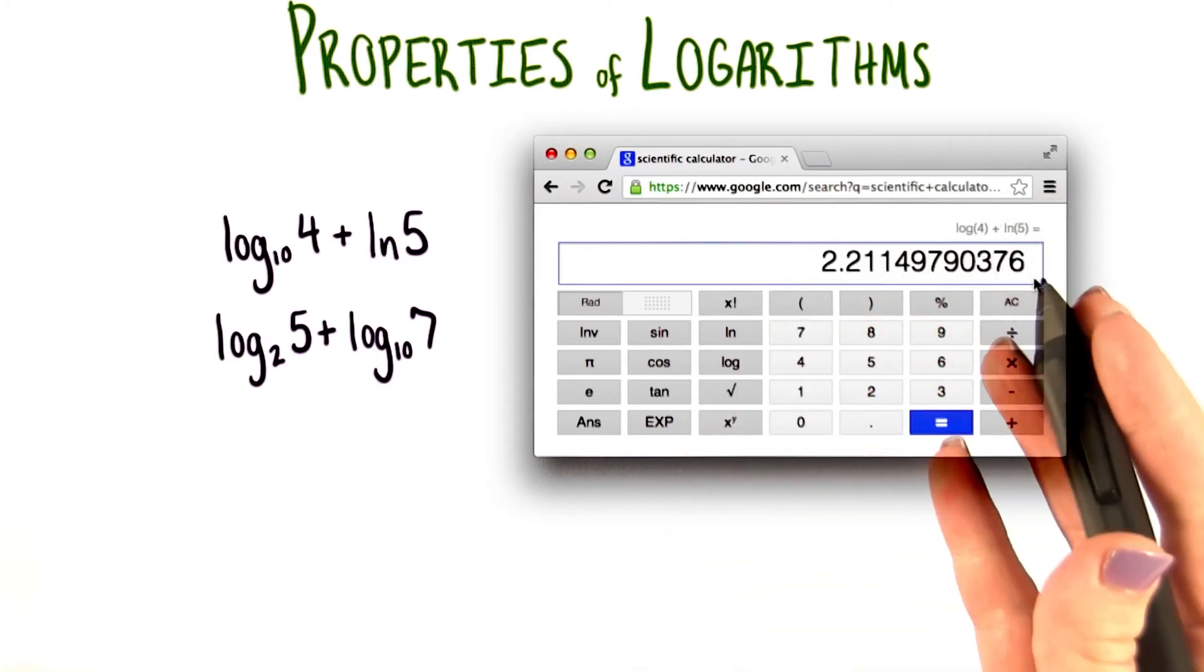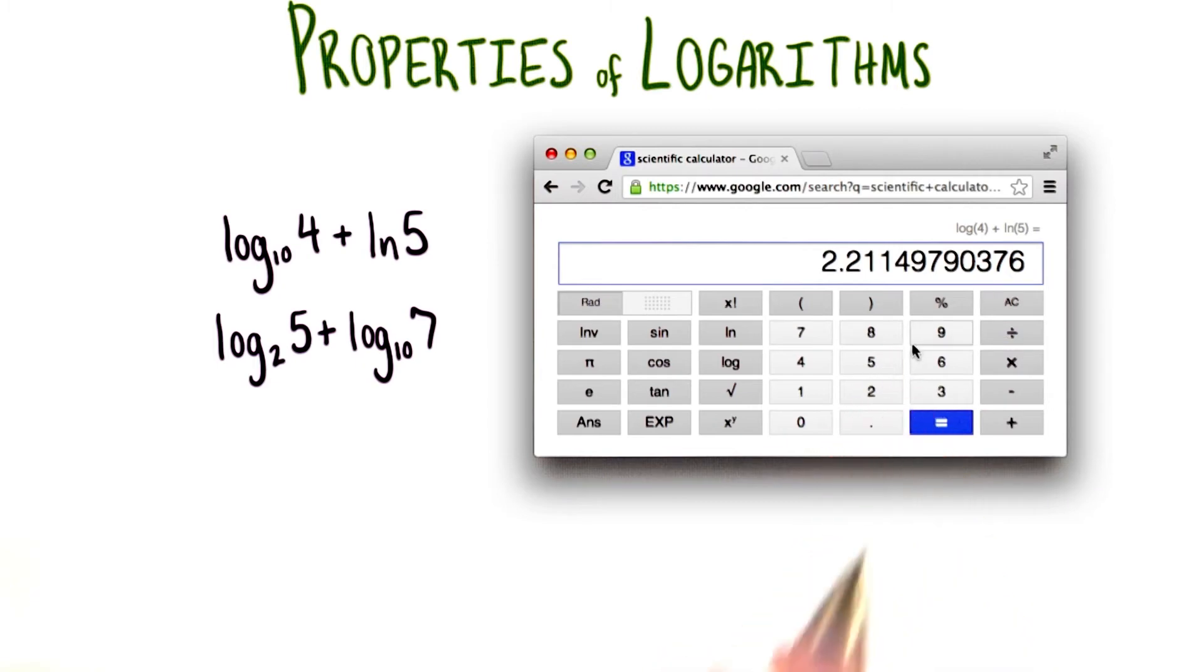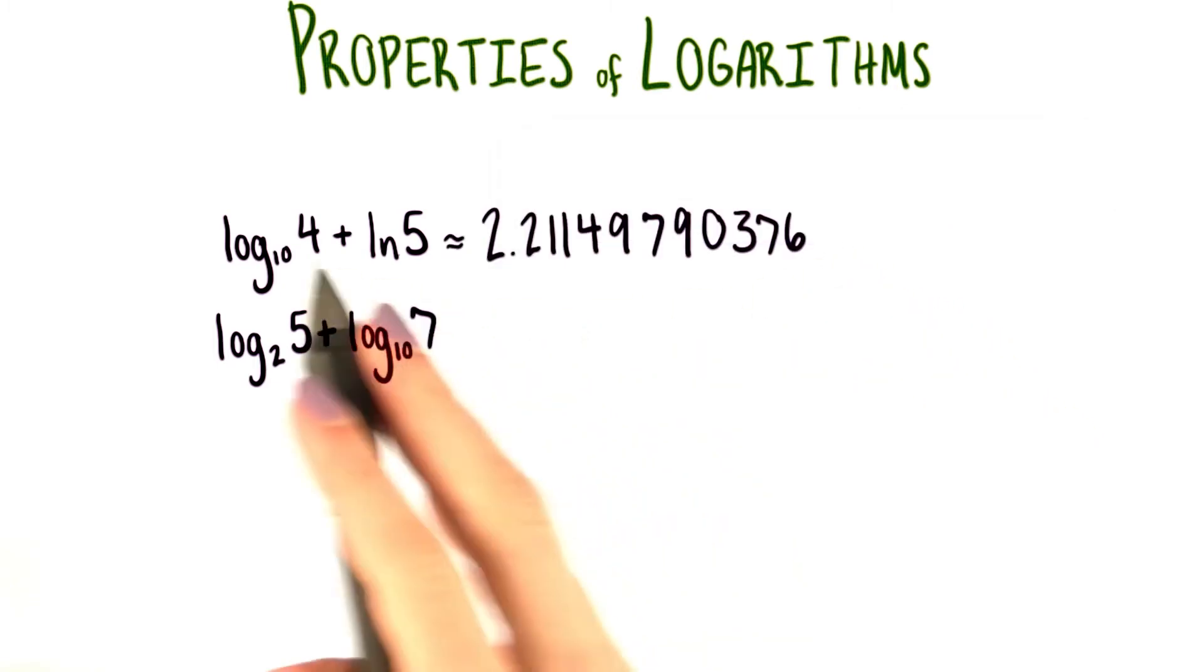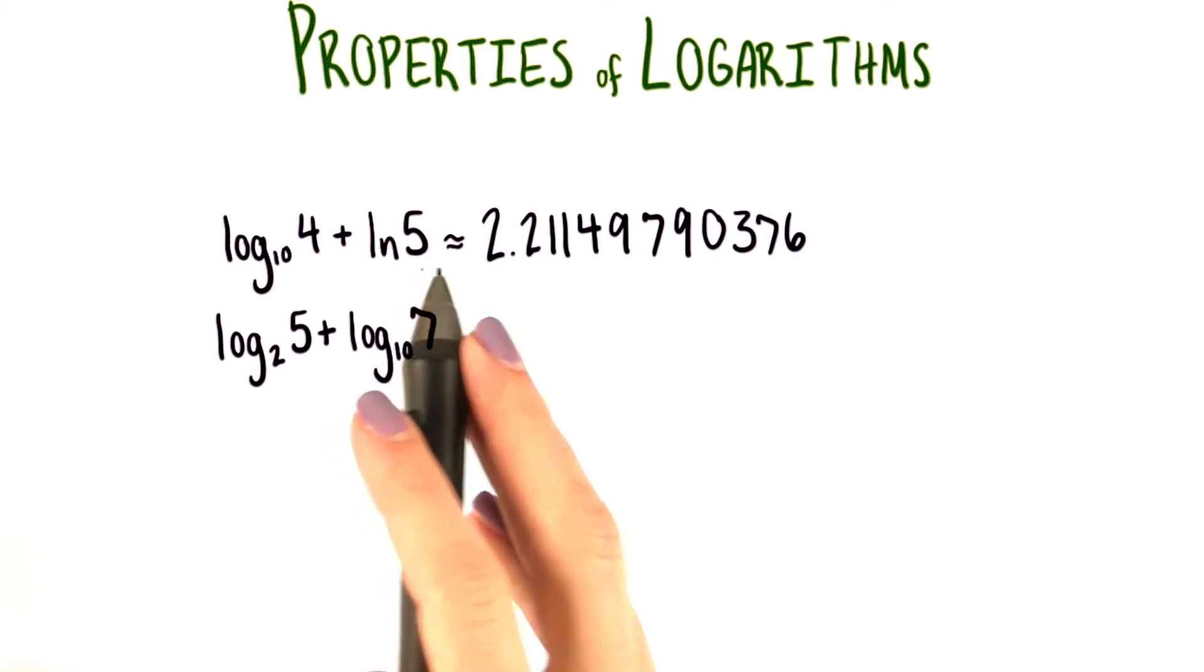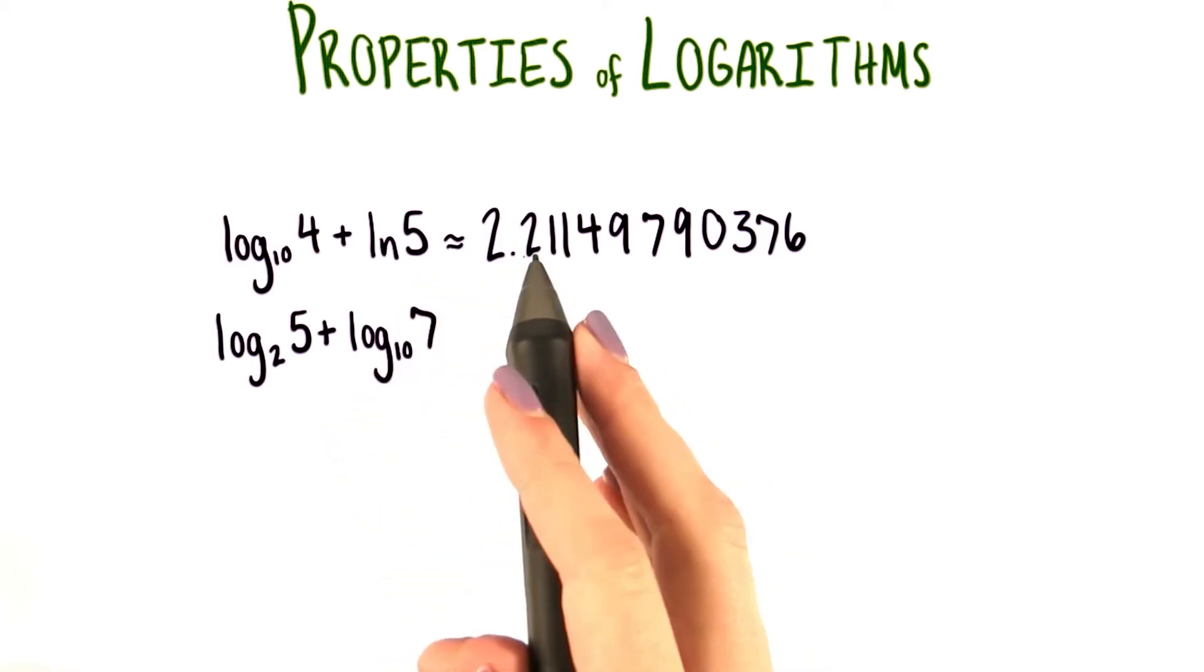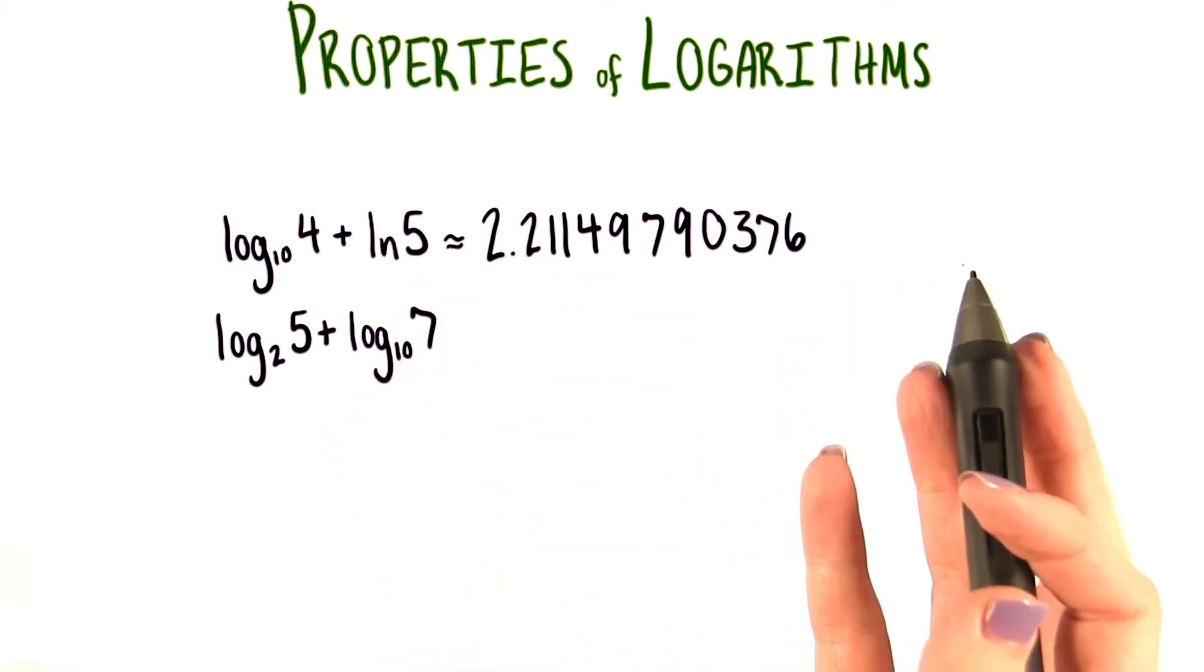And there we go. We have our number. Let's write it down. According to our calculator, log base 10 of 4 plus natural log of 5 is about equal to 2.211, and so forth.